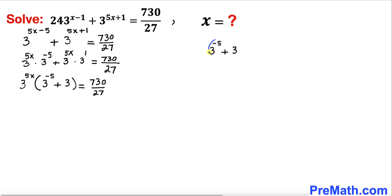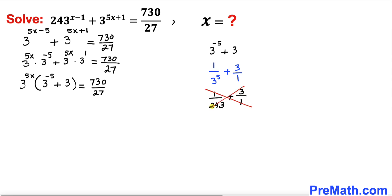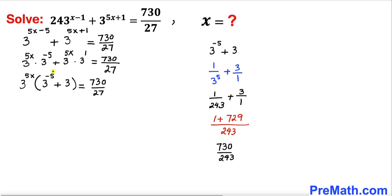This first term, 3 power negative 5, could be written as 1 divided by 3 power 5, plus 3 divided by 1. Now 3 power 5 is 243, so this is 1 divided by 243 plus 3 divided by 1. Adding these fractions by cross-multiplication: 1 times 1 is 1, plus 3 times 243 is 729, giving us 730 divided by 243. So this whole expression simplifies to 730 divided by 243.